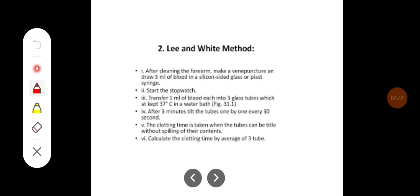Lee and White method is a definitive method for determining clotting time. It is preferred over the capillary tube method. Here, after cleaning the forearm, make a venipuncture and draw 3 ml of blood in a silicone-coated glass or plastic syringe.